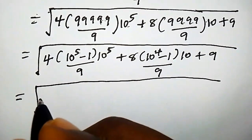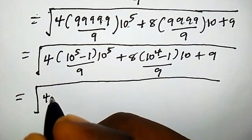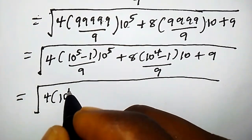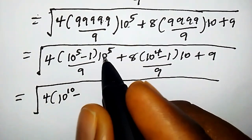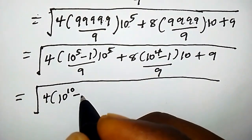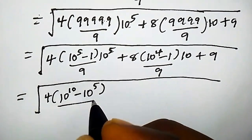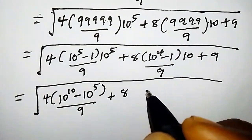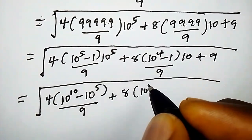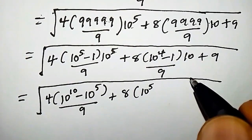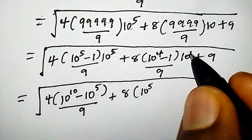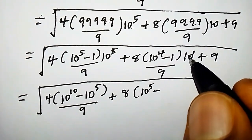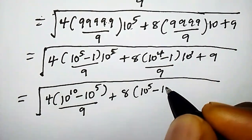Now we expand using these expressions. We get: 4 times 10^5 times 10^5 equals 4 times 10^10, minus 4 times 10^5, all over 9. Then for the second part: 8 times 10 times 10^4 gives 8 times 10^5 (adding exponents: 1 plus 4 equals 5), minus 8 times 10 which is just 80, all over 9, plus 9.